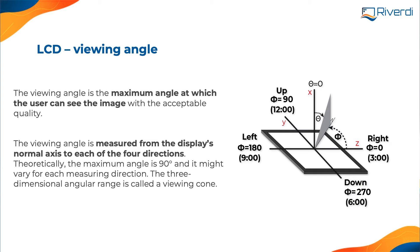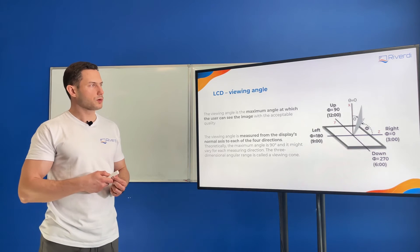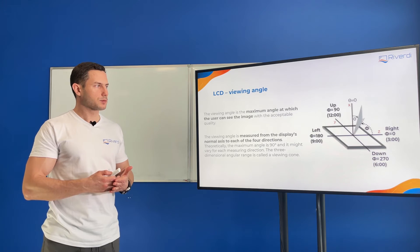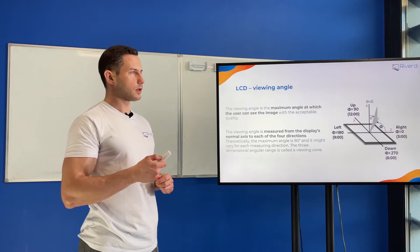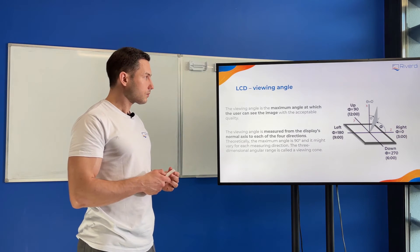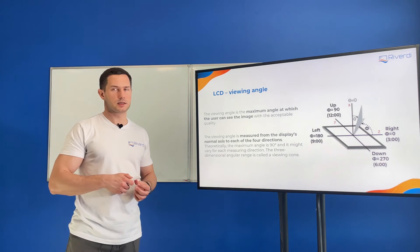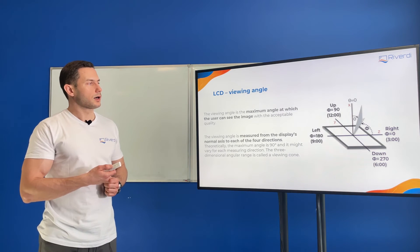The next important point is viewing angles. For LCD technology, it's quite important to understand that the image we see when looking straight at a display can be completely different from what we see from certain angles. This is usually well described in a datasheet. The viewing angles need to be defined there — typically 50, 60, or 70 degrees, and the best TFT displays will have up to 89 degrees.